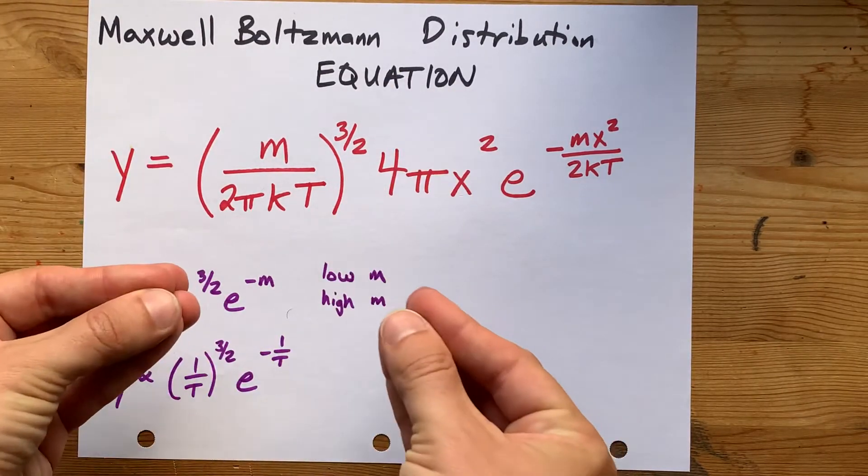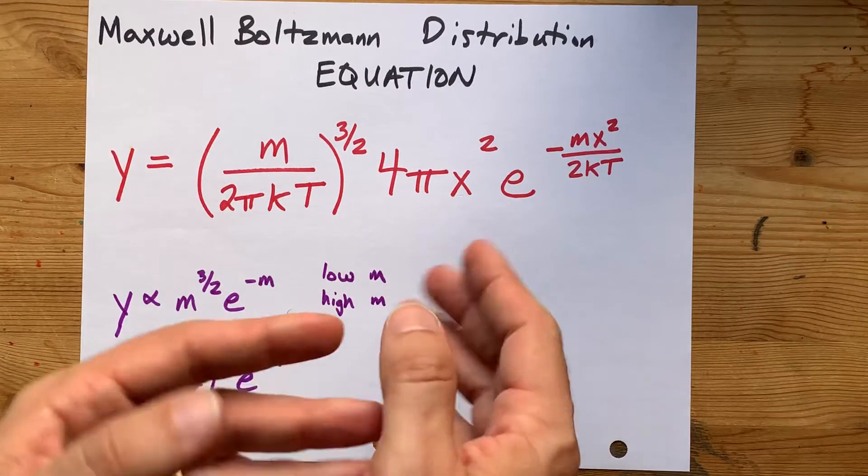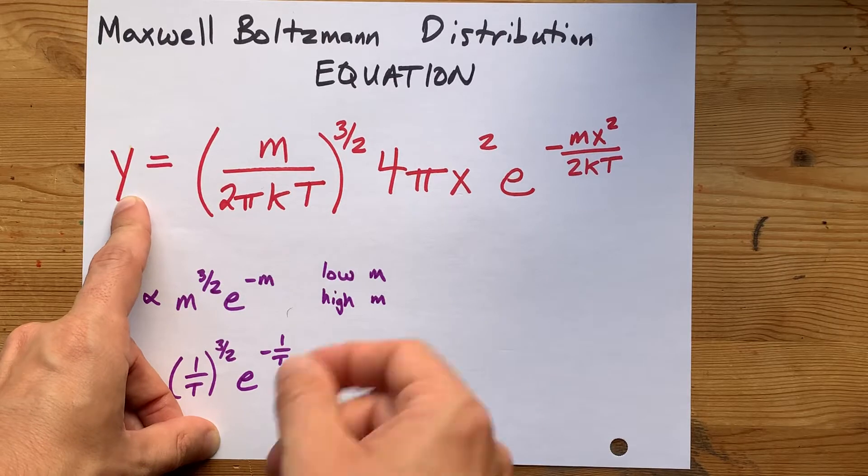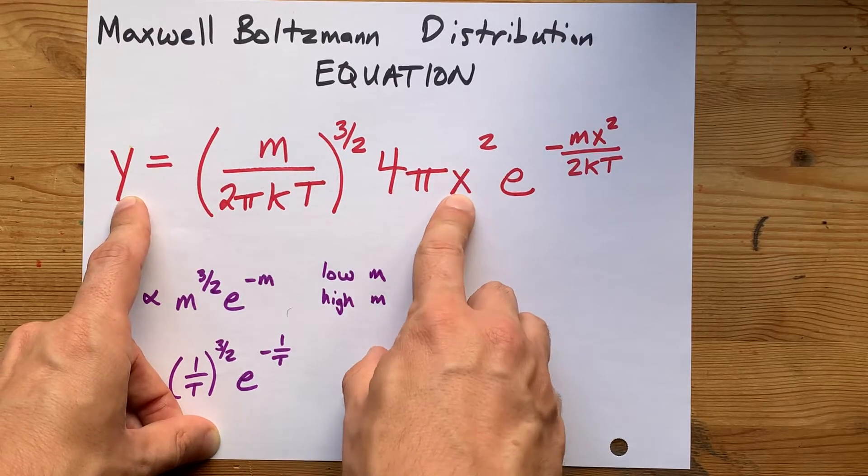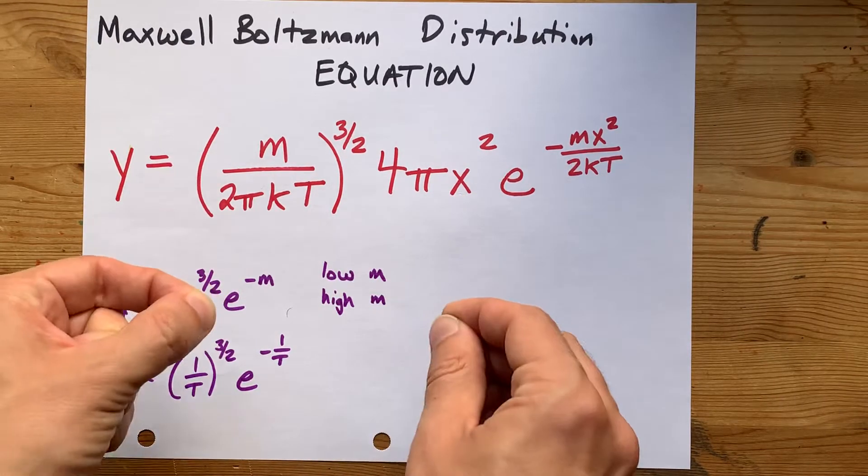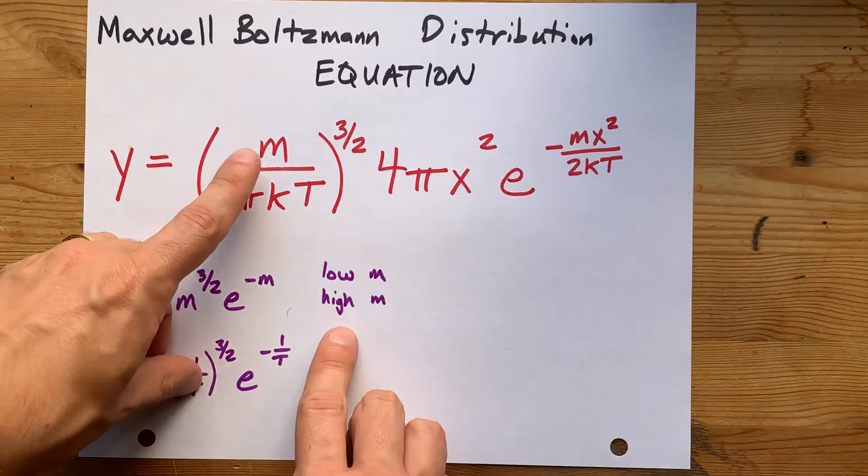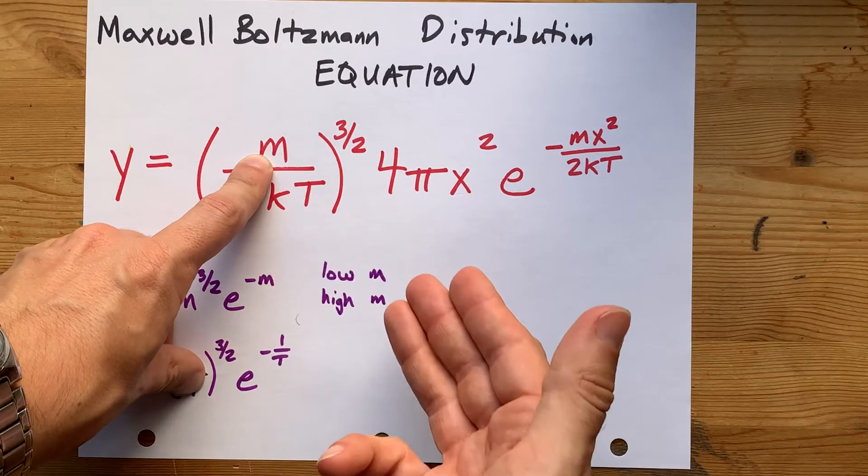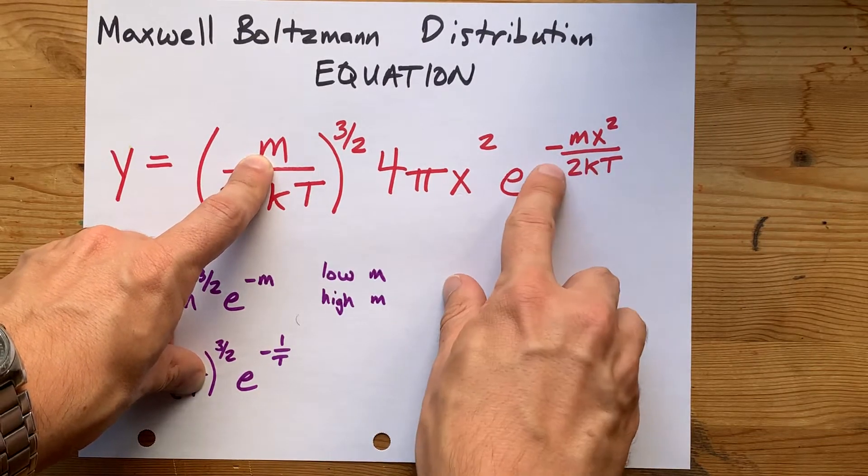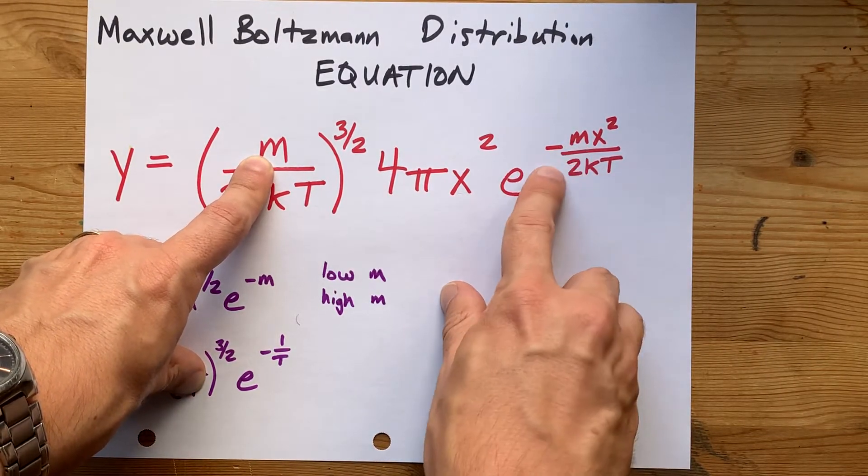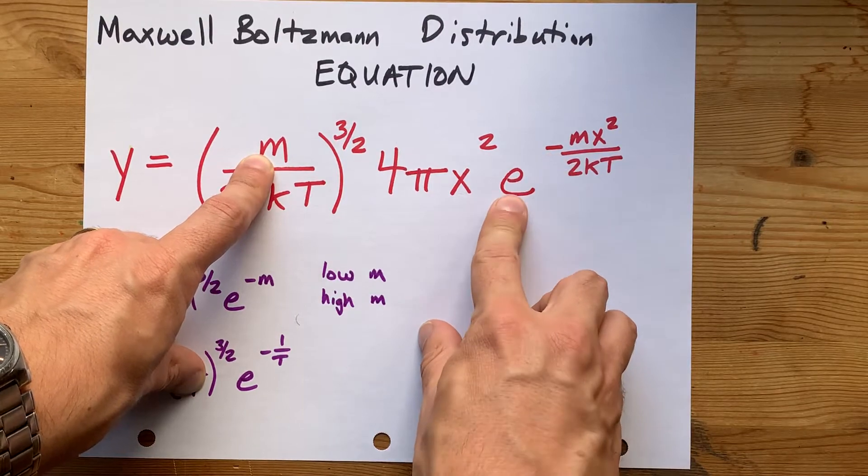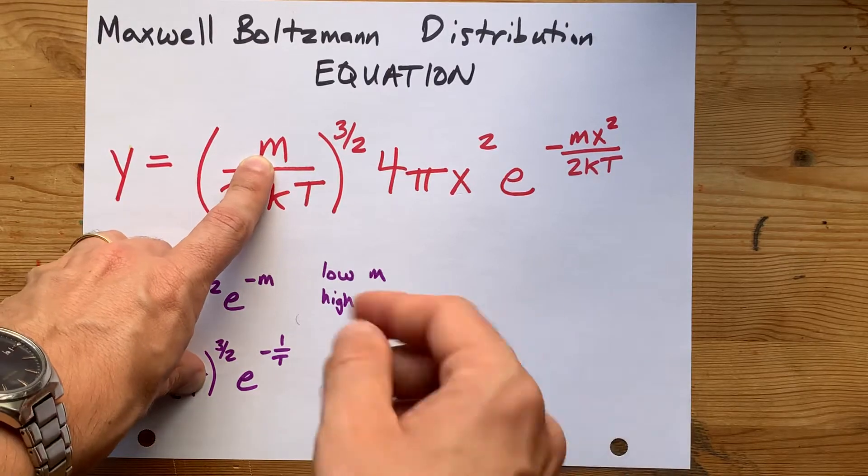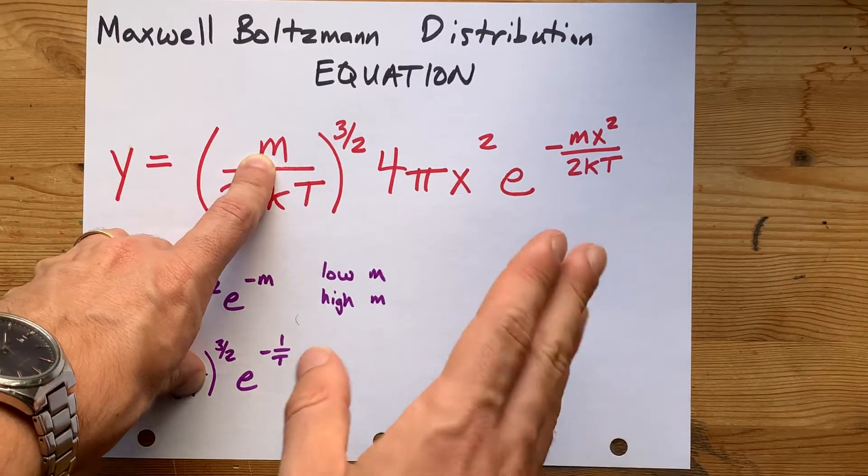What I want you to see here is where the M's and T's are. So the probability that a particle is traveling at a certain speed is affected by the particle size here, inside of the to the power of three halves term, and here inside the numerator of the negative exponent on E. E is 2.718 approximately. It's a constant. The point is it's a positive number bigger than one.